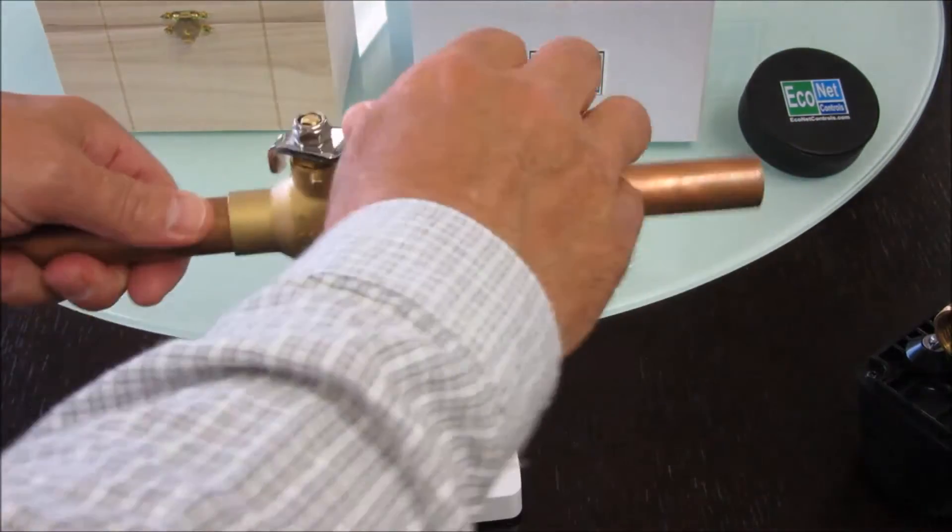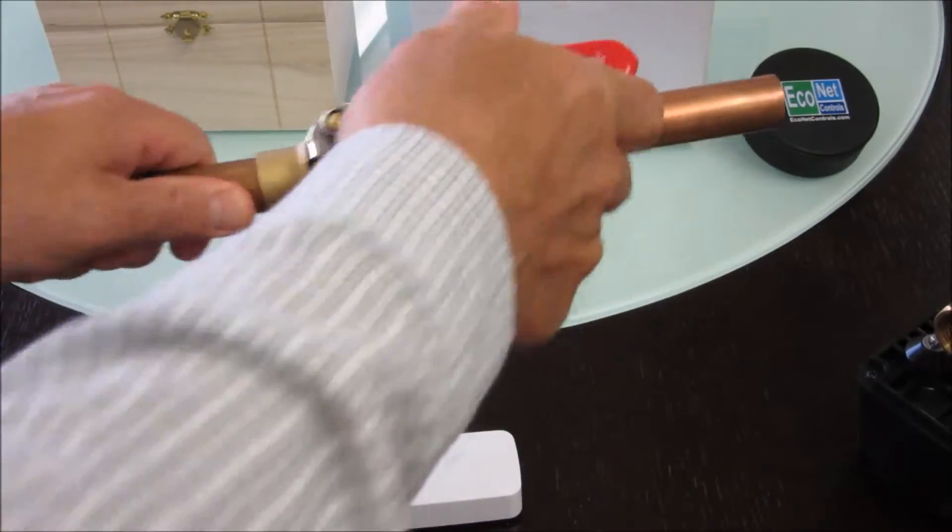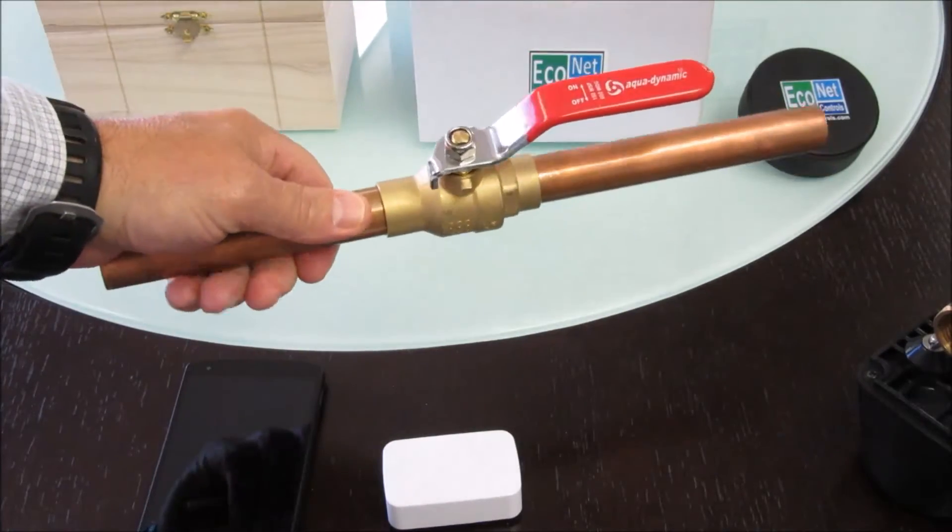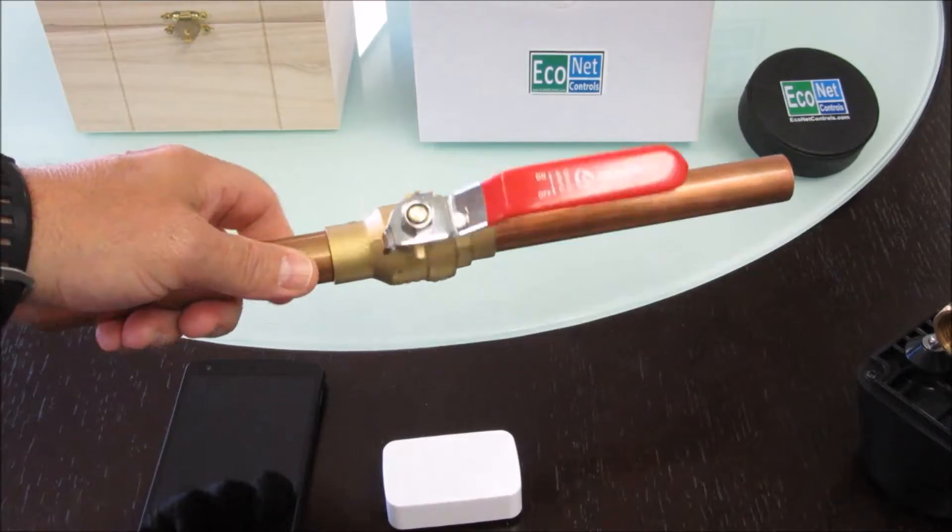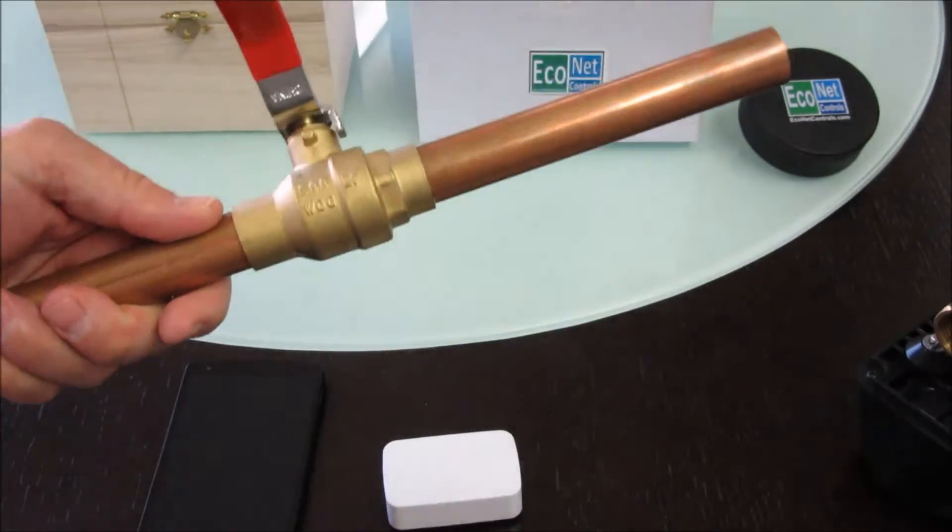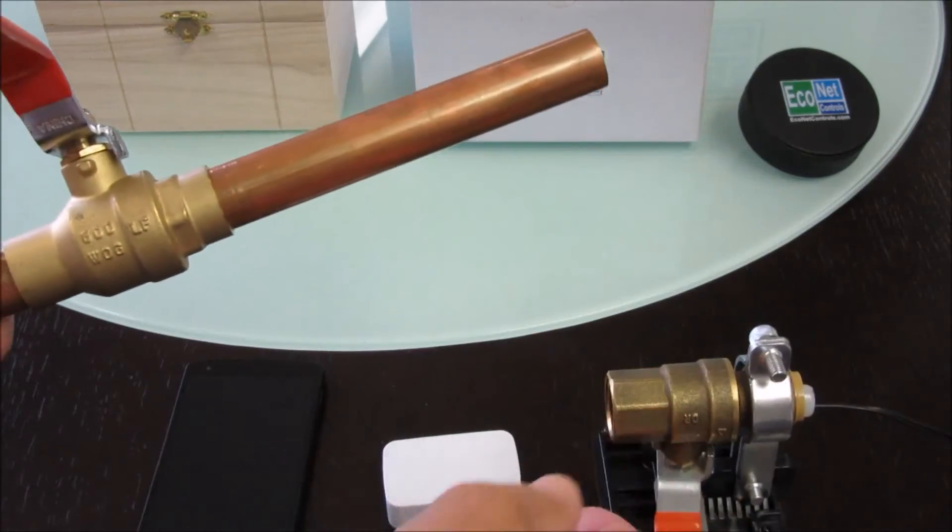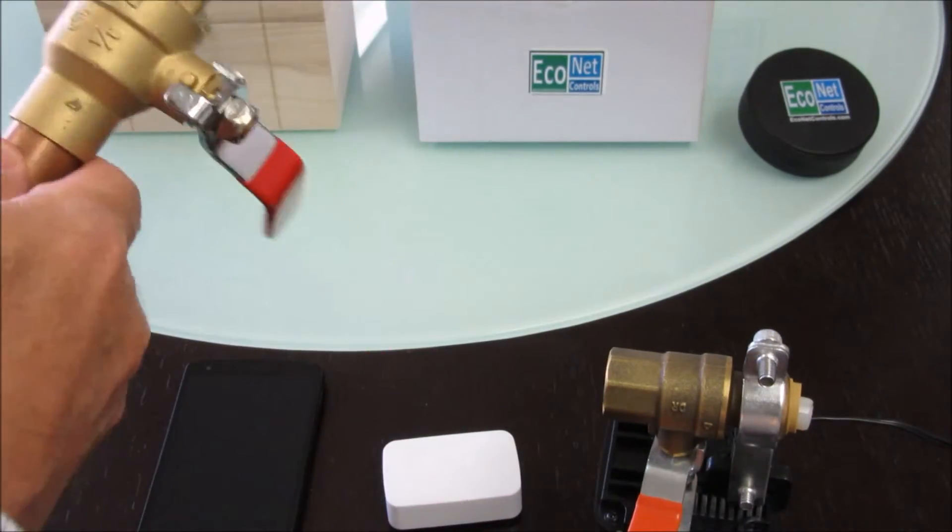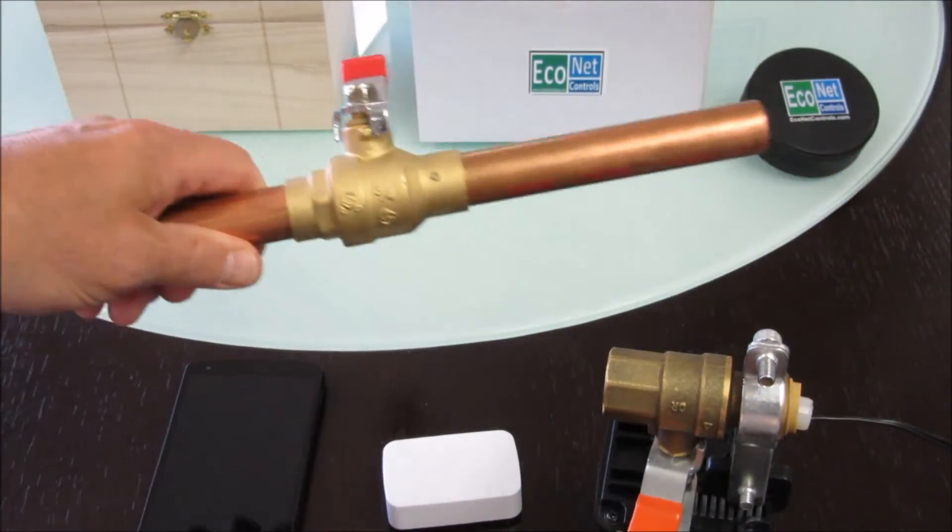It just goes over top of it so this avoids you having to do any plumbing. Of course, if you don't have a levered valve then you'd have to get your plumber to put one in, but this is a half-inch valve here and this is a three-quarter inch size.